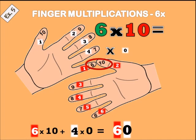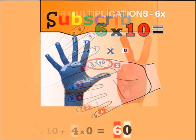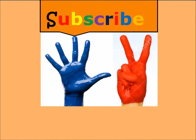Six times ten equals sixty. It's very easy, funny, and interesting — you can use it to teach any child. We learn this from six times up to ten times. Thanks for watching, don't forget to subscribe, like, and share. Bye for now.